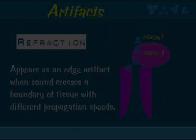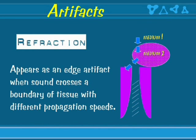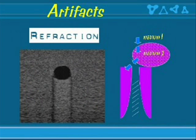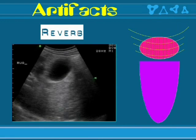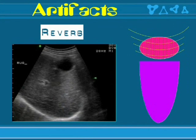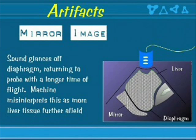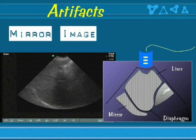Refraction occurs as an edge artifact when sound crosses a boundary with tissues of different propagation speeds. In the case of a cyst, notice the two dark bars from each edge — these are refraction artifacts. Reverberation artifact appears as bright lines, usually in the superficial part of the image, caused by interaction between the transducer and the skin. These bright lines are usually at equidistant lengths and can be seen within the gallbladder. Mirror image artifact is sometimes encountered when ultrasound strikes the diaphragm — multiple paths fool the machine into thinking there is liver tissue on both sides of the diaphragm.